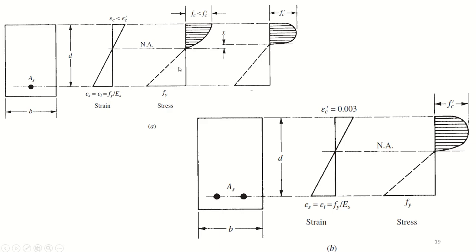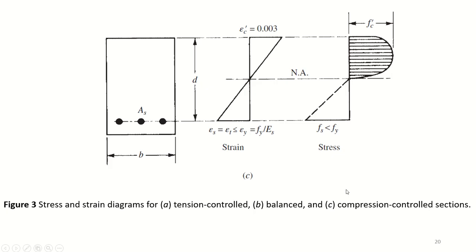In the first case, steel is yielding because strain in steel equals Fy divided by Es, and the strain in concrete is less than the ultimate strain. In the second case, steel is yielding at the same time as concrete is crushing — reaching 0.003 simultaneously — this is the balanced section. In the third case, concrete is crushing but the tensile strain in steel is less than yielding, so steel has not yielded yet. This is the compression control section.